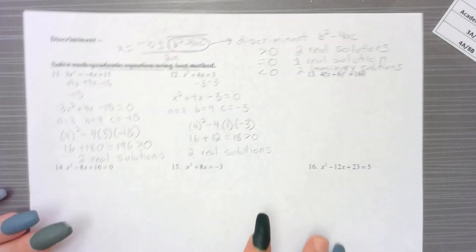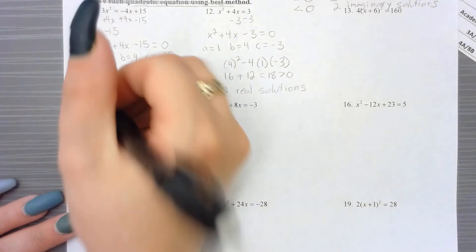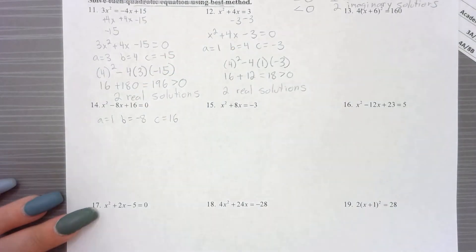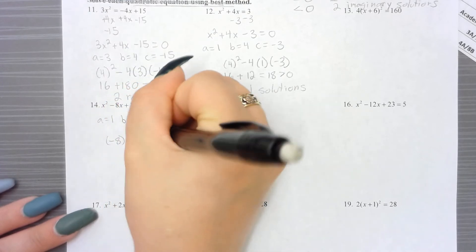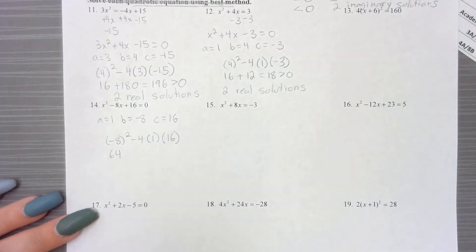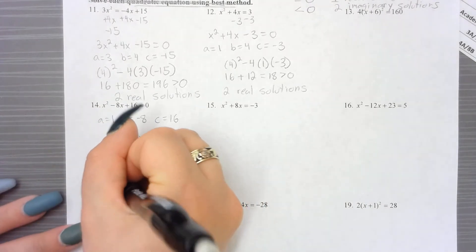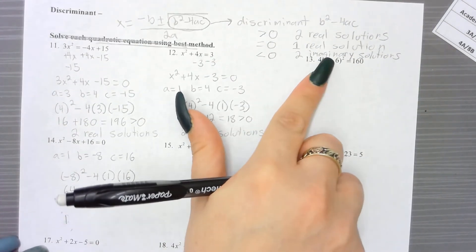Jumping to number 14 — it's already set equal to 0. A is 1, B is negative 8, and C is 16. We plug in: negative 8 squared minus 4 times 1 times 16. Negative 8 squared is positive 64. Negative 4 times 1 times 16 is negative 64. So we get 64 minus 64 equals 0. That zero means we are going to have one real solution.